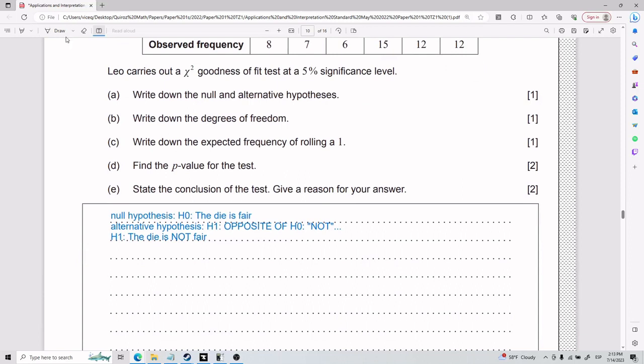Your alternative hypothesis, following its name alternative, it's the other option, is always going to be the opposite of H0. And so whatever you put in H0 with the word not. So my H1 is actually going to be that the die is not fair. One of them has to have the word not.